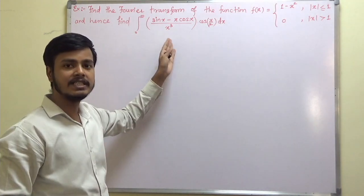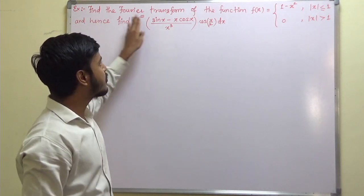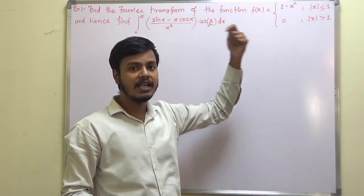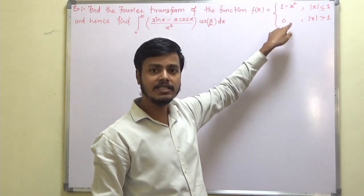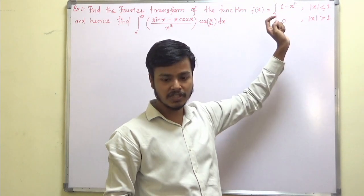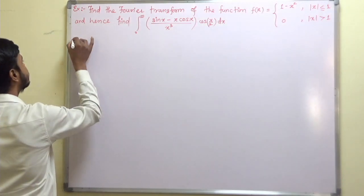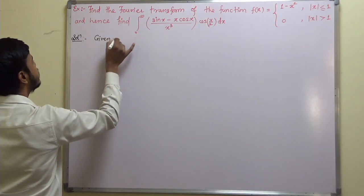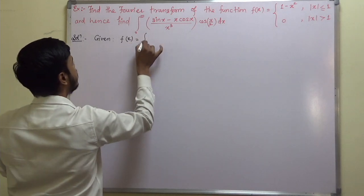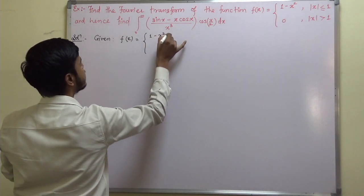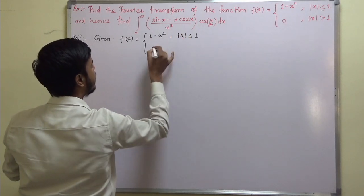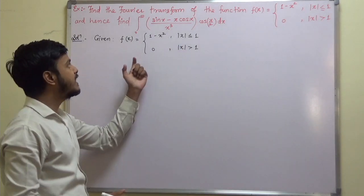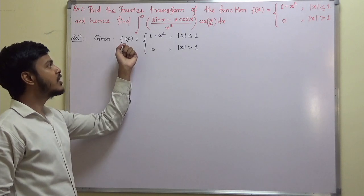We have already seen a problem of the type: find the Fourier transform of a function. So what is the change between the last problem and this problem? There it was one and zero, whereas here we have a different function. So given: f(x) is equal to one minus x squared for mod of x less than or equal to one, and it is zero for mod of x greater than one.